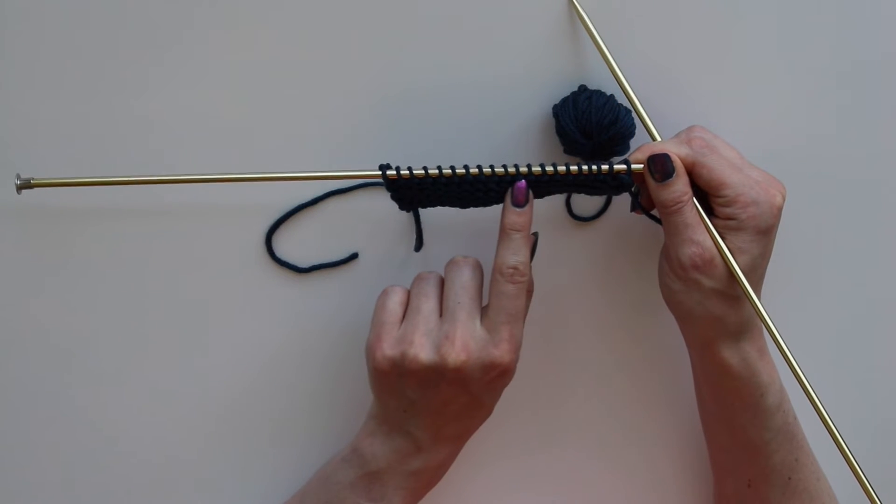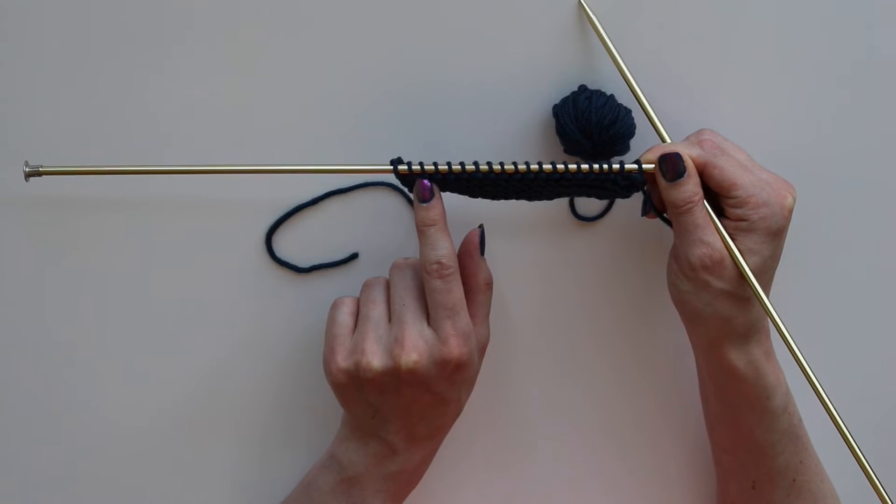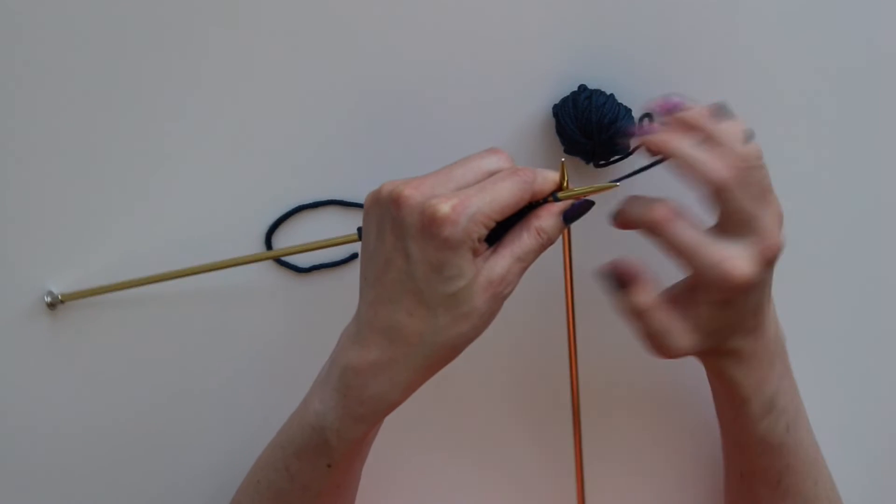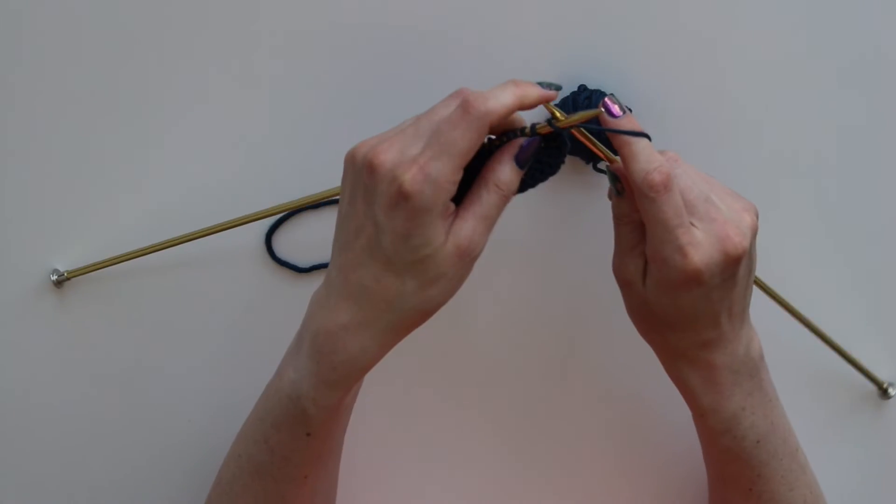We can see that the row that we are about to knit into is a row of the purl stitches, the little bumps. Now I will go ahead and knit all the way across this row of purl stitches.